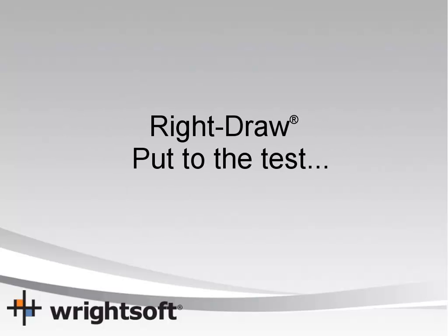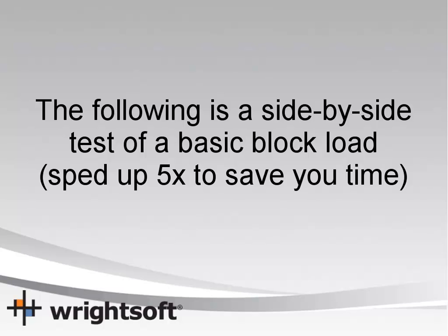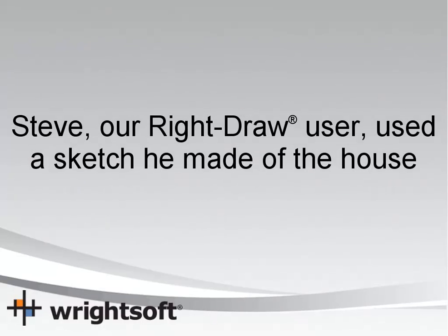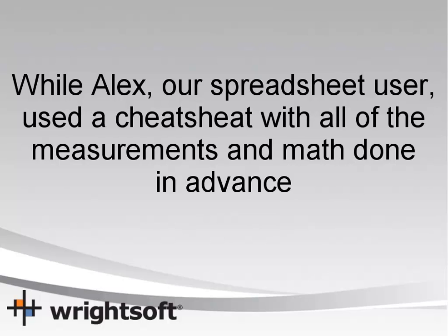And all of that's great, but since they say seeing is believing, we've come up with a little test — a simple block load of a house with an unconditioned garage and some window overhang from a front porch. One user using RightDraw, another just the spreadsheet-style entries. We invite you to watch them side-by-side and compare.